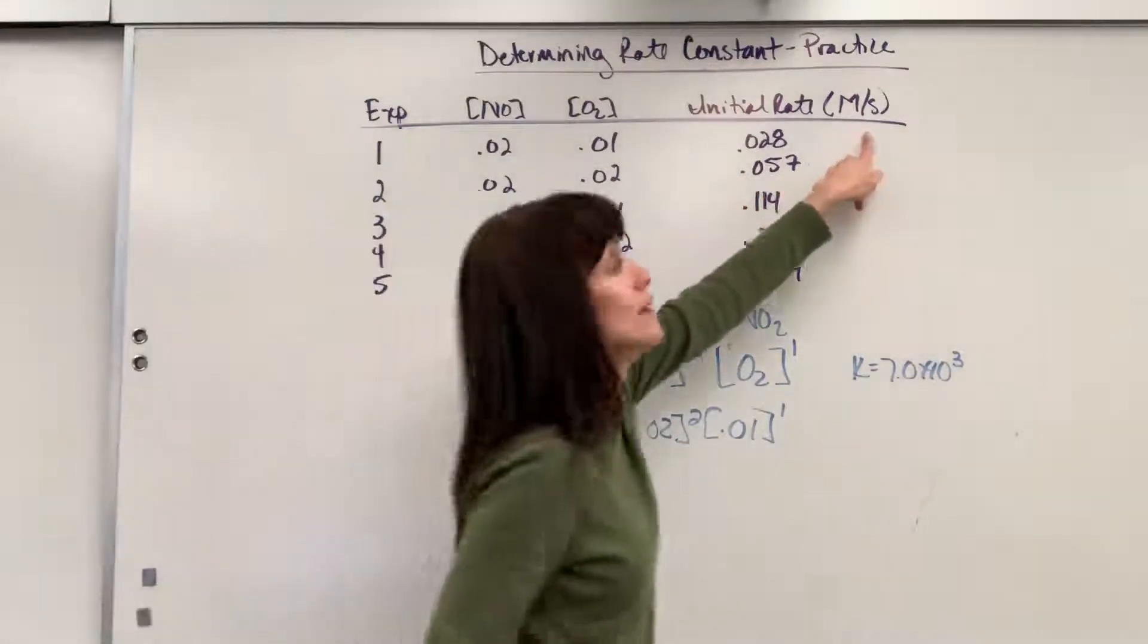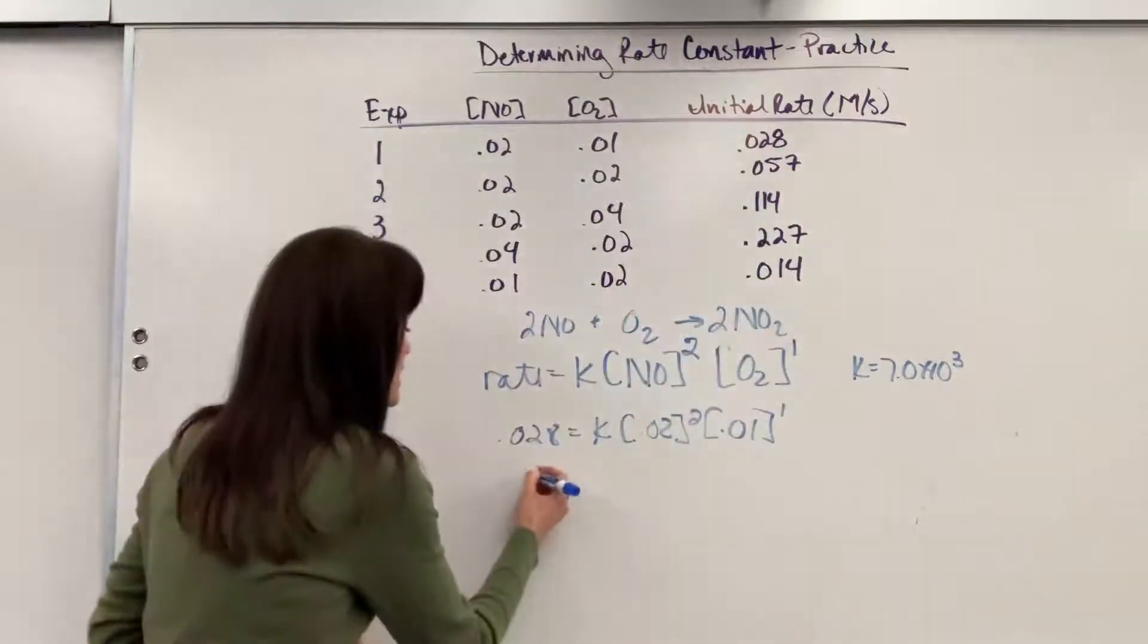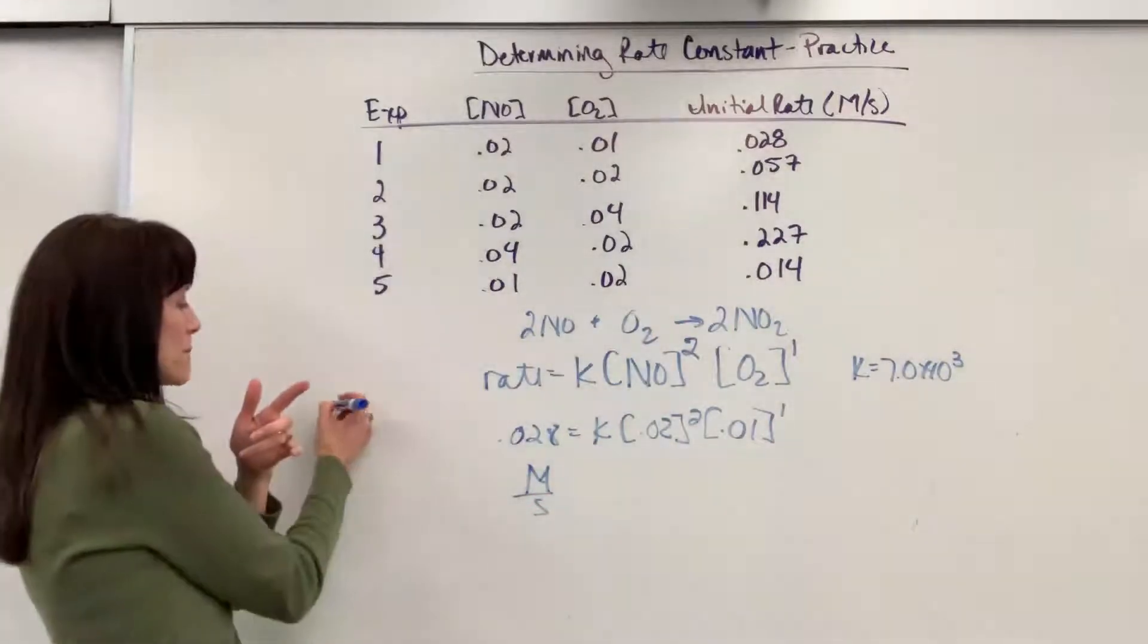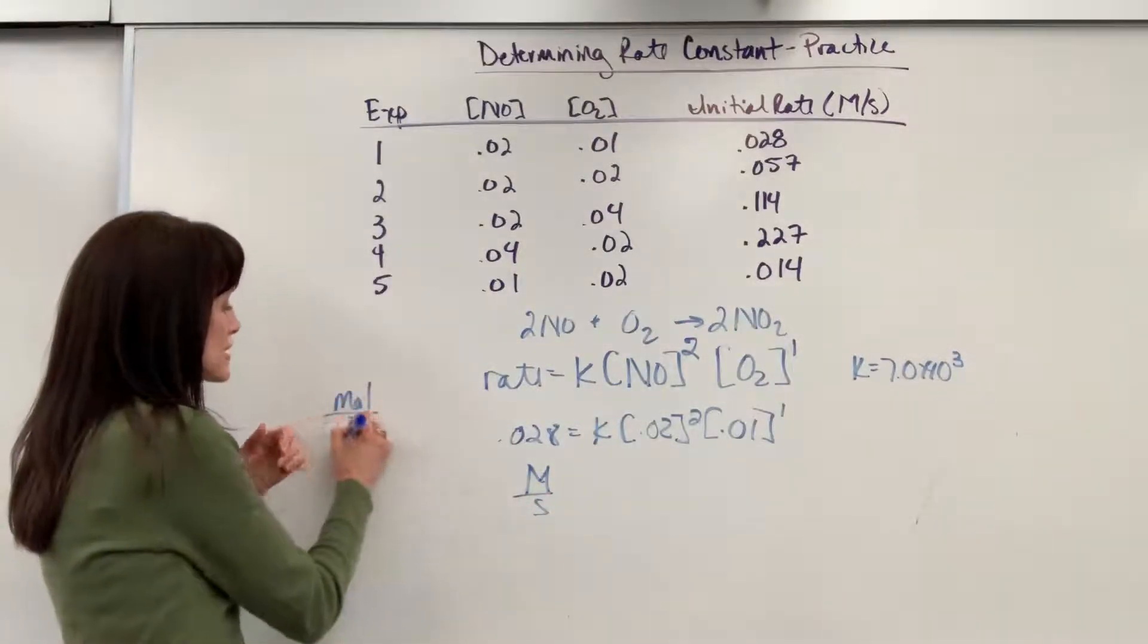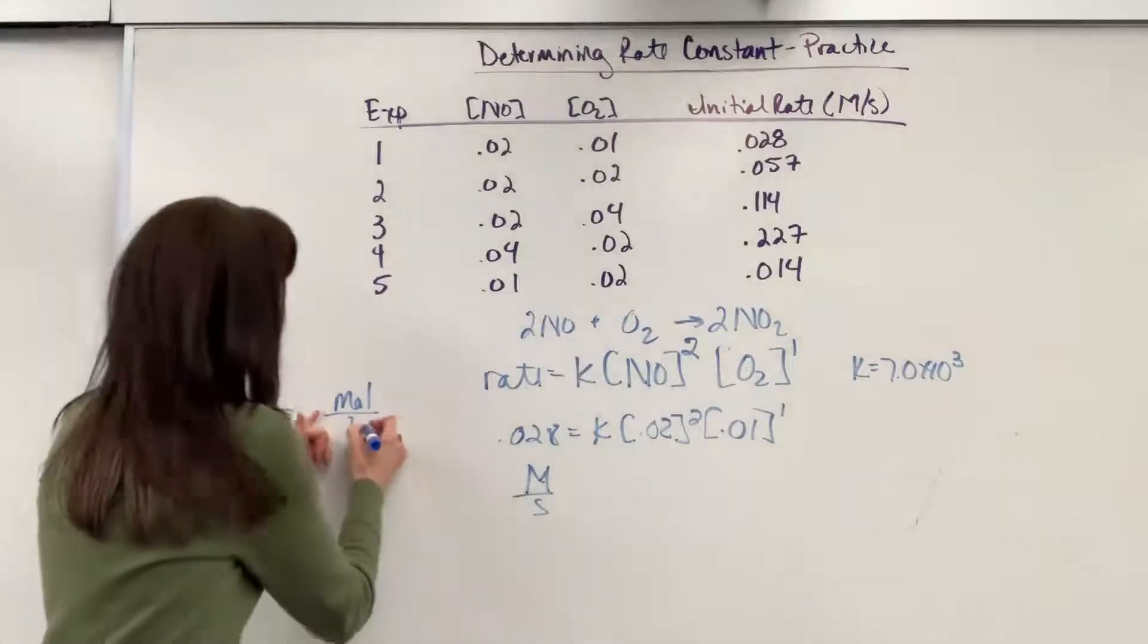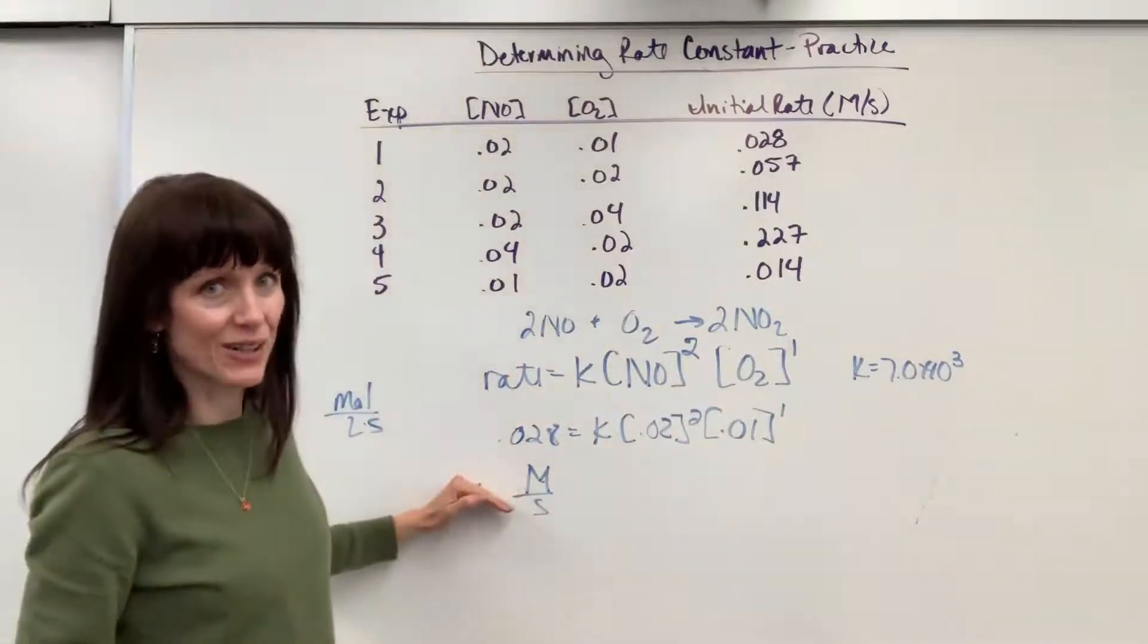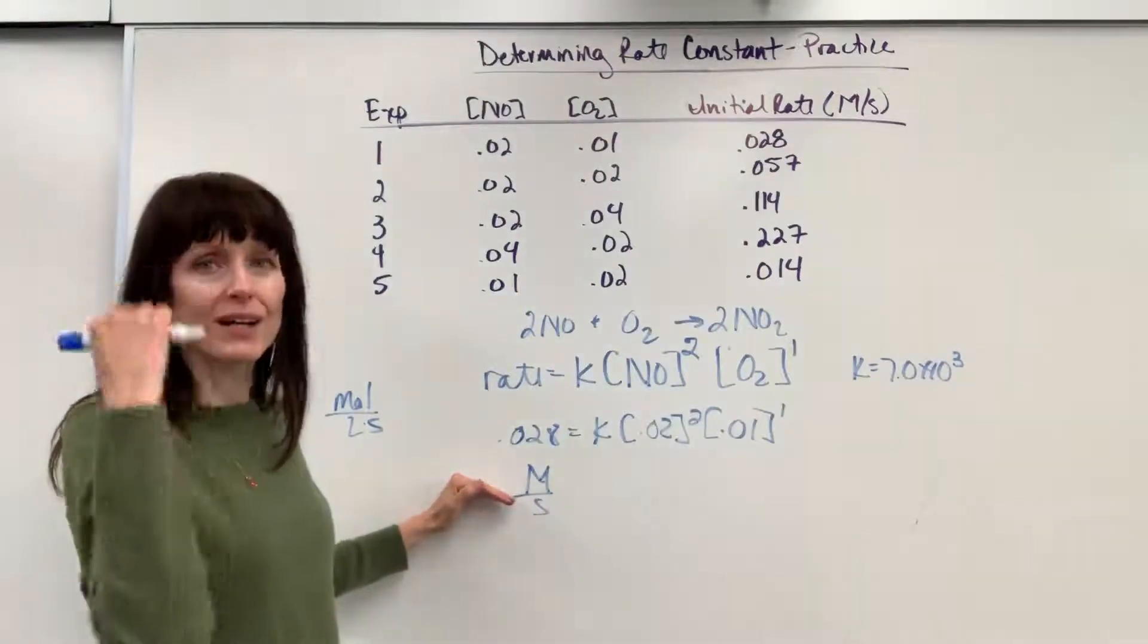Now, rate has to be molarity per second. They gave that to us. Molarity per second. Your book might do moles over liter. Remember that's molarity times second. Those are the same thing. I think this is just a little bit cleaner. I always write it molarity over second.